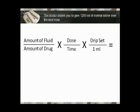I came up with a problem that's going to come out with a nice neat answer. The doctor orders you to give 1200 milliliters of normal saline over the next hour. They'd probably just say a liter, but to make the math look nice and neat I did that. Here is our formula, but again we're just going to take what we need. Do we need a drop set? Yeah. Do we need a dose over time? Absolutely correct.